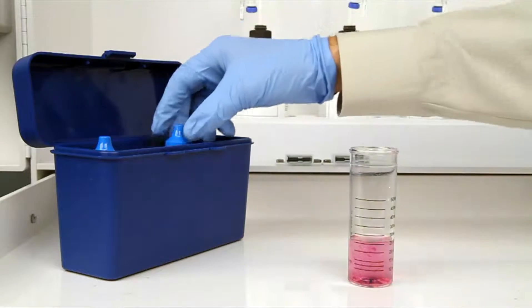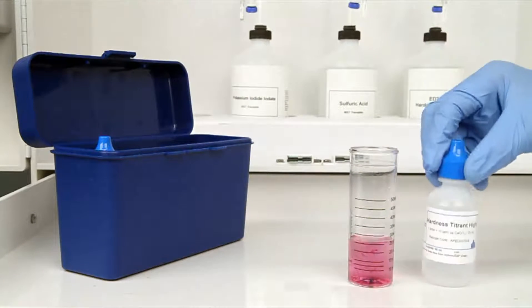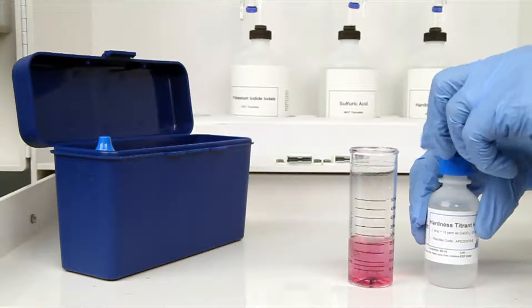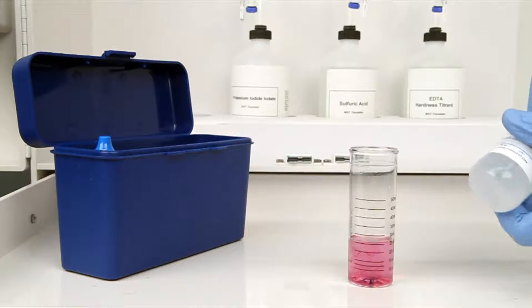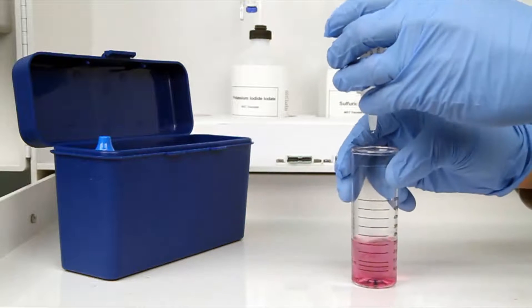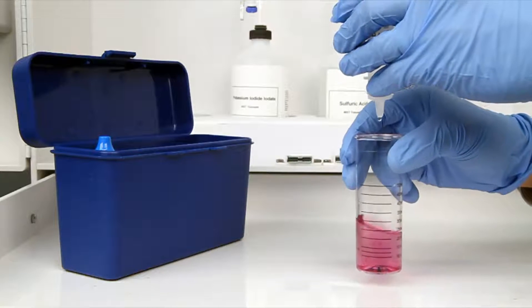The next step according to the Endpoint ID procedure is to perform the titration. Each bottle of titrant is labeled with the equivalency and sample size it was manufactured for. It's important to make sure you have the proper titrant and the proper sample size for this titration.